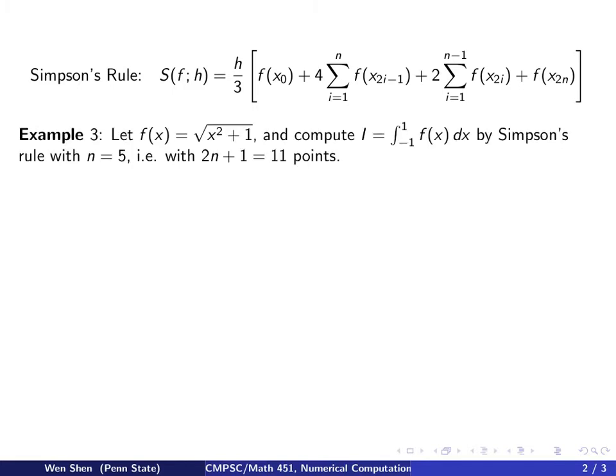Now let's take this example, say I want to integrate a function that's square root of x squared plus 1. I want to integrate it from negative 1 to 1. And now we want to use Simpson's rule with N equals to 5. So remember the N in Simpson's rule is slightly different. If you have N equals to 5, the actual number of points being used is 2N plus 1, which is 11 points.